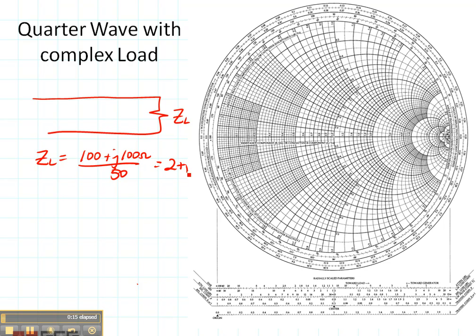So I get 2 plus J2. That spot right there. There's my load. And let's say that I want to match that to a transmission line with a characteristic impedance of Z0.